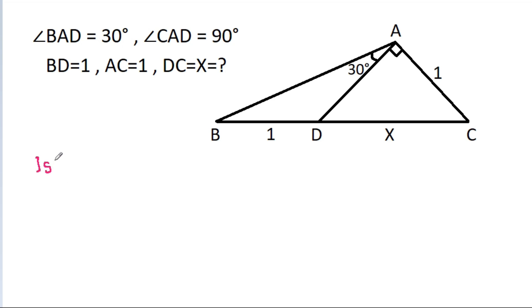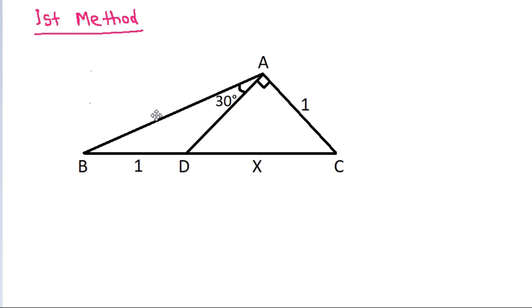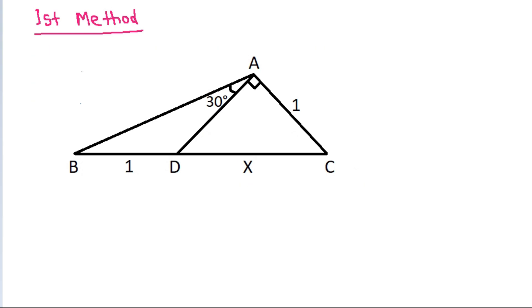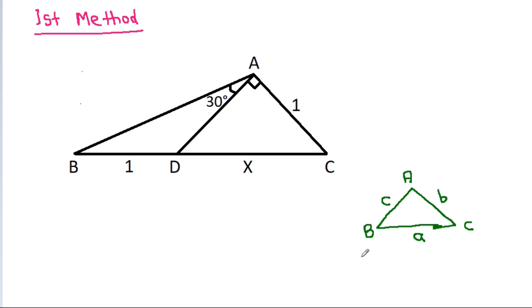The first method: in any triangle A, B, C with sides a, b, c, the sine rule states a by b is equal to sin A by sin B.